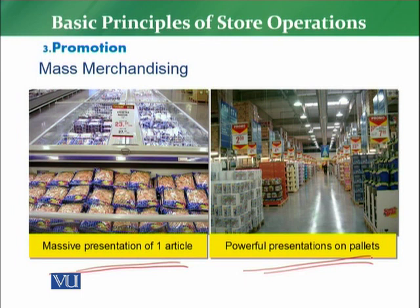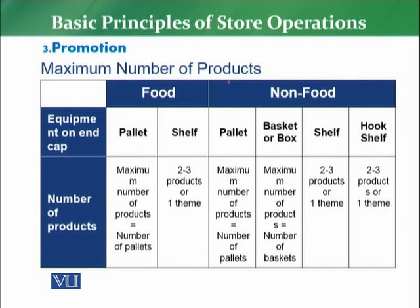Similarly, the second point regarding mass merchandising is powerful presentation. If you want to make a powerful presentation, you have to do it on pallets. Pallets are the wooden racks on which you display products. For a power presentation, it is necessary that the display you create — the mass merchandising — is properly palletized so that the customer can easily and clearly see it. As you can see here, the product is very well presented, signage is also mentioned, and a good message is given to the customer.